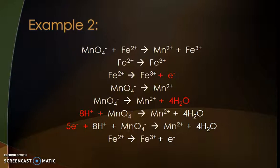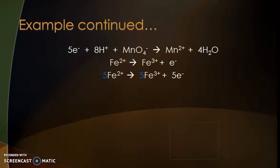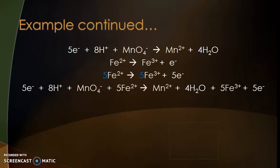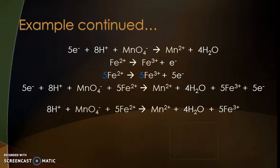Now I have my two balanced half equations. However, that is not the end of the story. I need to multiply one or both equations so that the electrons are equal. I have five electrons being gained by the permanganate but only one electron being lost by the iron. So five iron 2+ ions need to turn into five iron 3+ ions, releasing five electrons — multiply that equation by five. Then we combine our equations, and we can see five electrons on each side, which we cancel out to get our overall equation.